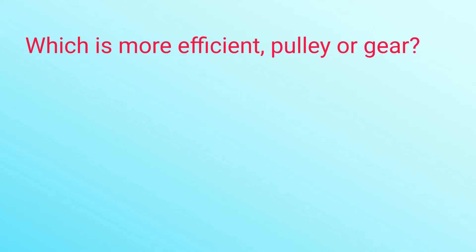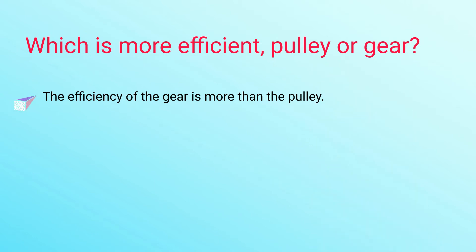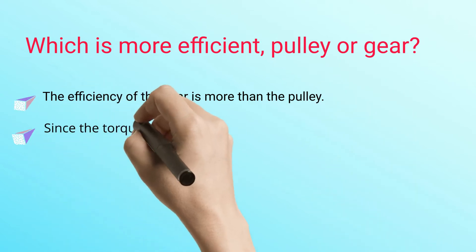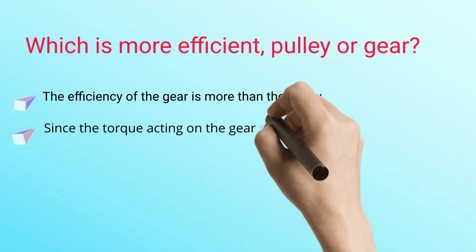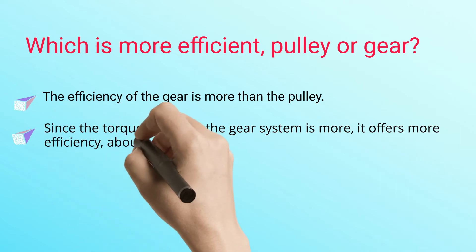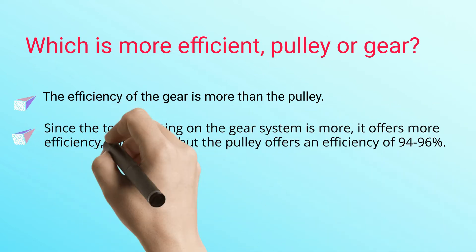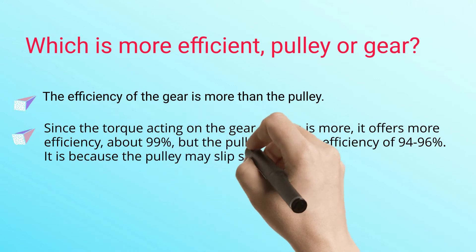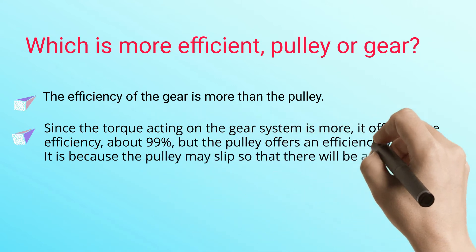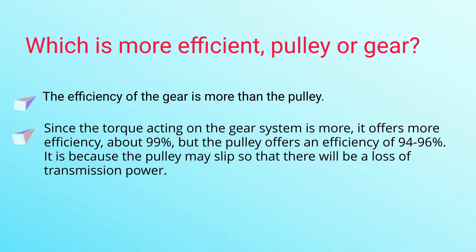Which is more efficient — pulley or gear? The efficiency of the gear is more than the pulley. Since the torque acting on the gear system is more, it offers more efficiency, about 99%, but the pulley offers an efficiency of only 94 to 96%. This is because the pulley may slip, resulting in a loss of transmission power.